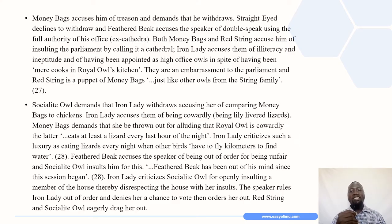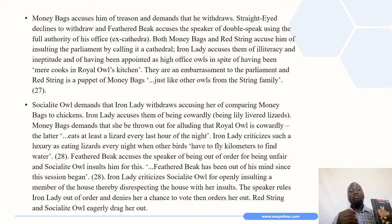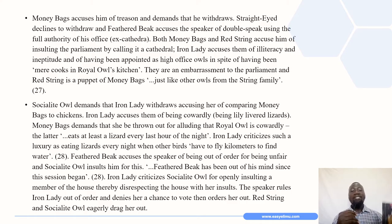Moneybags accuses Straight-Eyed of treason and demands he withdraws, but Straight-Eyed declines. Feathered Beak accuses the speaker of double-speak using the full authority of his office — ex-cathedra. Both Moneybags and Red String accuse Straight-Eyed of insulting parliament by calling it a cathedral. Straight-Eyed accuses them of illiteracy and ineptitude and of having been appointed to high office despite being mere cooks in the royal house kitchen. Red String is exposed as a puppet of Moneybags. The Socialite Owl demands that Iron Lady withdraw for comparing Moneybags to chickens.